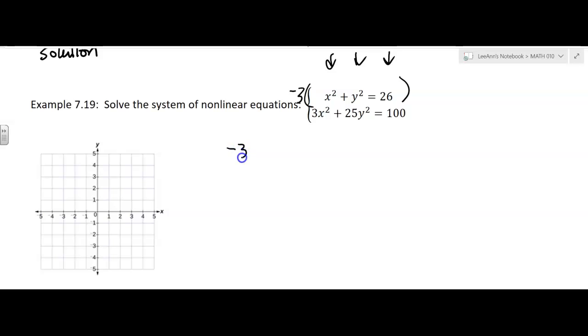I'm going to have negative three x squared minus three y squared equals negative 78. And then I just copy down the bottom equation. When I add these two equations, these drop out, which we thought that was going to happen. That was our plan. They cancelled out.